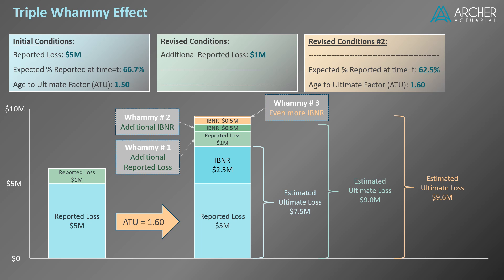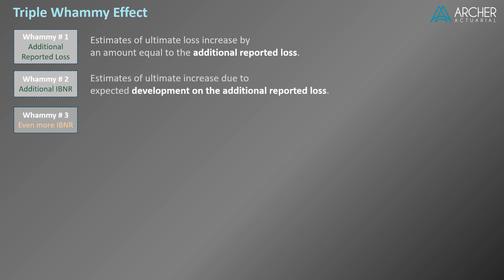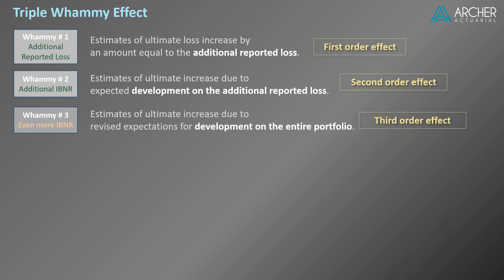Let's summarize these effects verbally. When losses are higher than expected, there are three effects. In whammy number one, estimates of ultimate loss increase by an amount equal to the additional reported loss. In whammy number two, estimates increase due to the expected development on the additional reported loss. And in whammy number three, estimates increase due to revised expectations for development on the entire portfolio. If you need to explain this effect to your boss and don't want to use the word 'whammy,' consider the terms first order, second order, and third order effects. The first order effect is an obvious, direct effect of increasing reported loss, while the second and third order effects are indirect results of the first — somewhat like ripples flowing through the process.